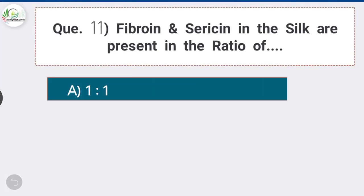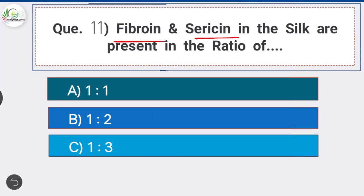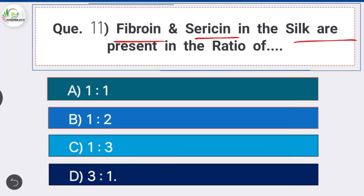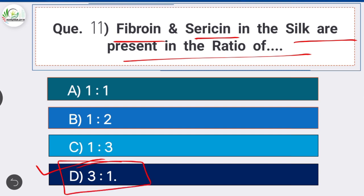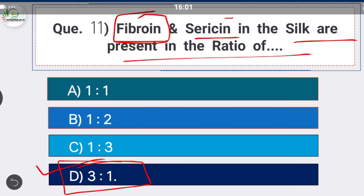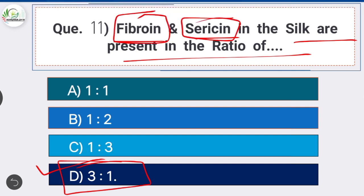Question 11: Fibroin and sericin in silk are present in which ratio? Option D is the correct answer: 3 is to 1. Fibroin and sericin in silk are present in the ratio of 3:1; silk contains 75 percent fibroin and 25 percent sericin.